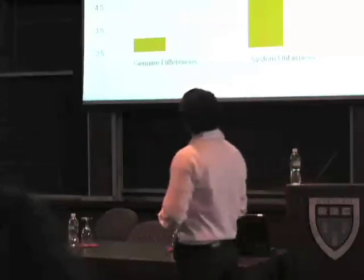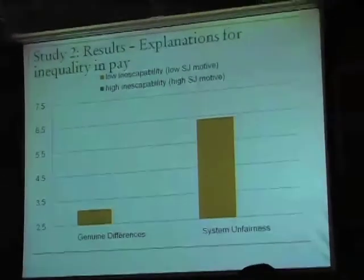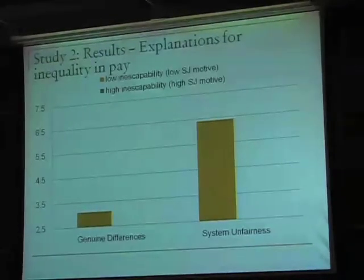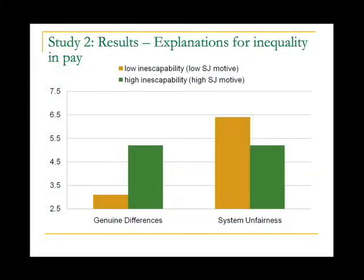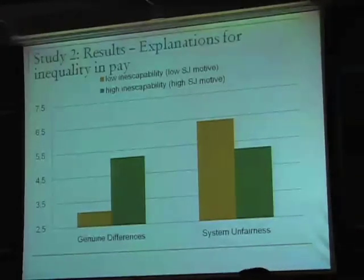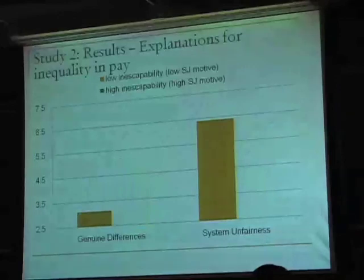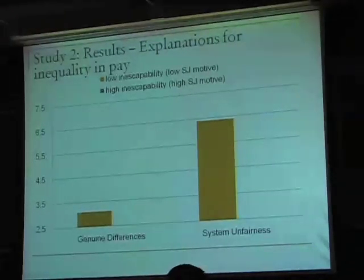When the system justification motive is low, people prefer to explain the pay gap via systemic unfairness rather than genuine differences — they'd rather say something is wrong with the system. But in the high system justification condition, that tendency disappears. People become significantly less likely to say the system is flawed and significantly more likely to say men and women are genuinely different types of people, and that's why men get paid more. This baseline preference for systemic explanations may partly reflect social desirability, and our manipulation already makes it very hard to blame genuine differences.